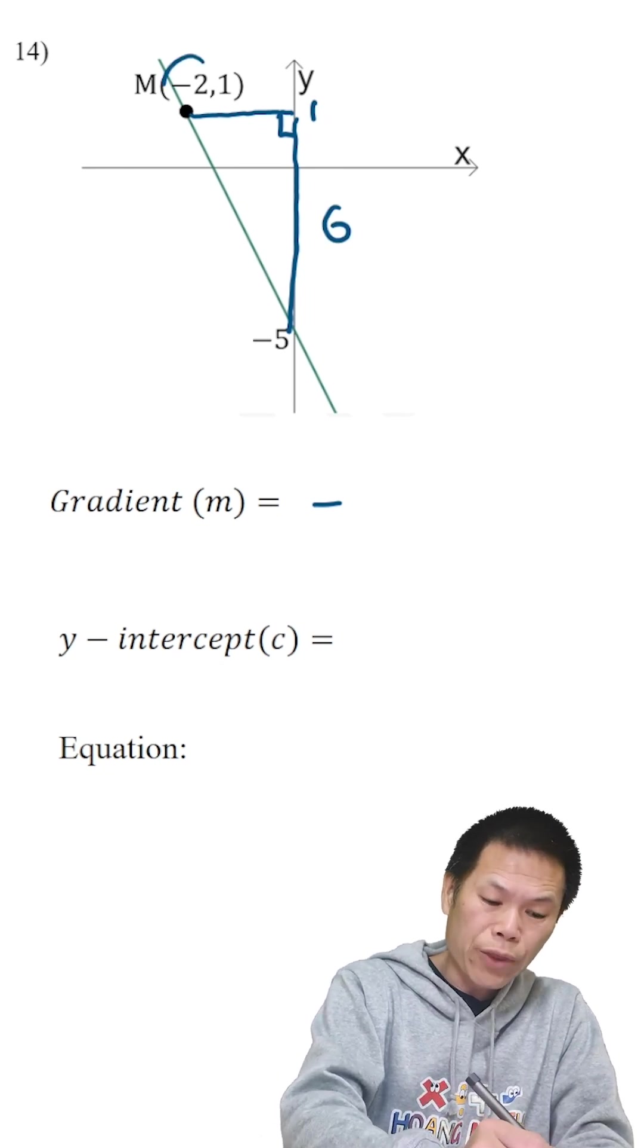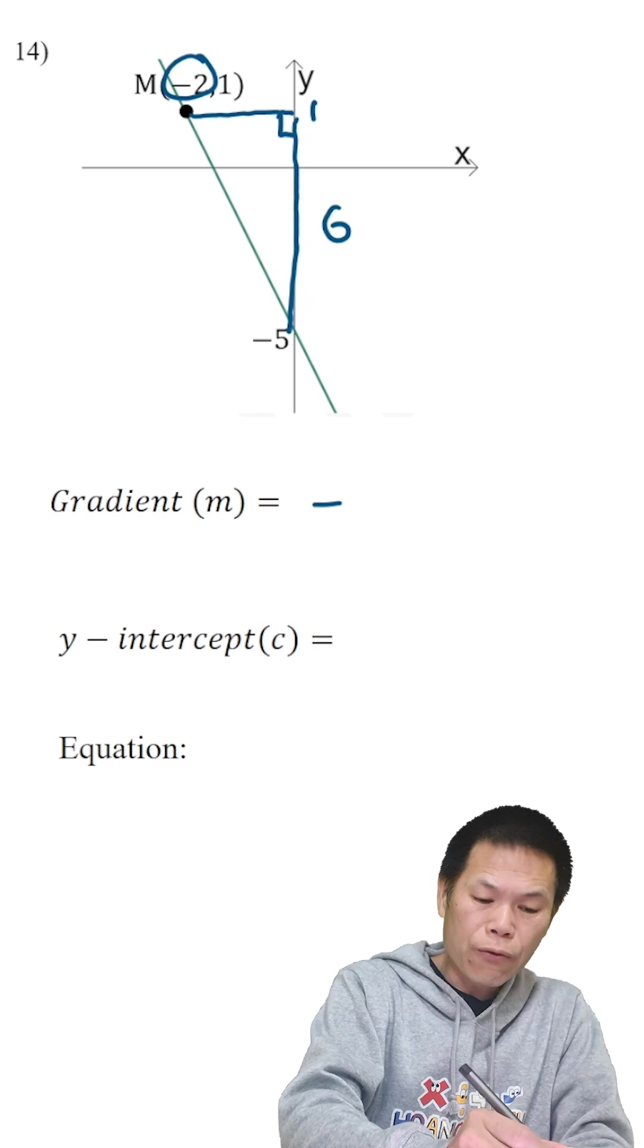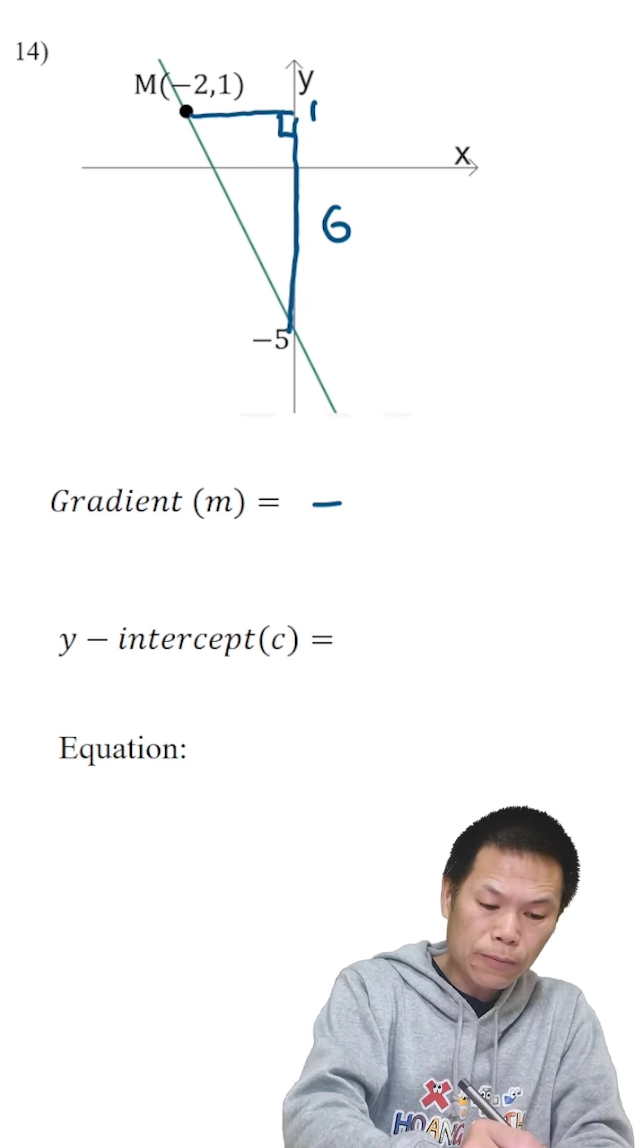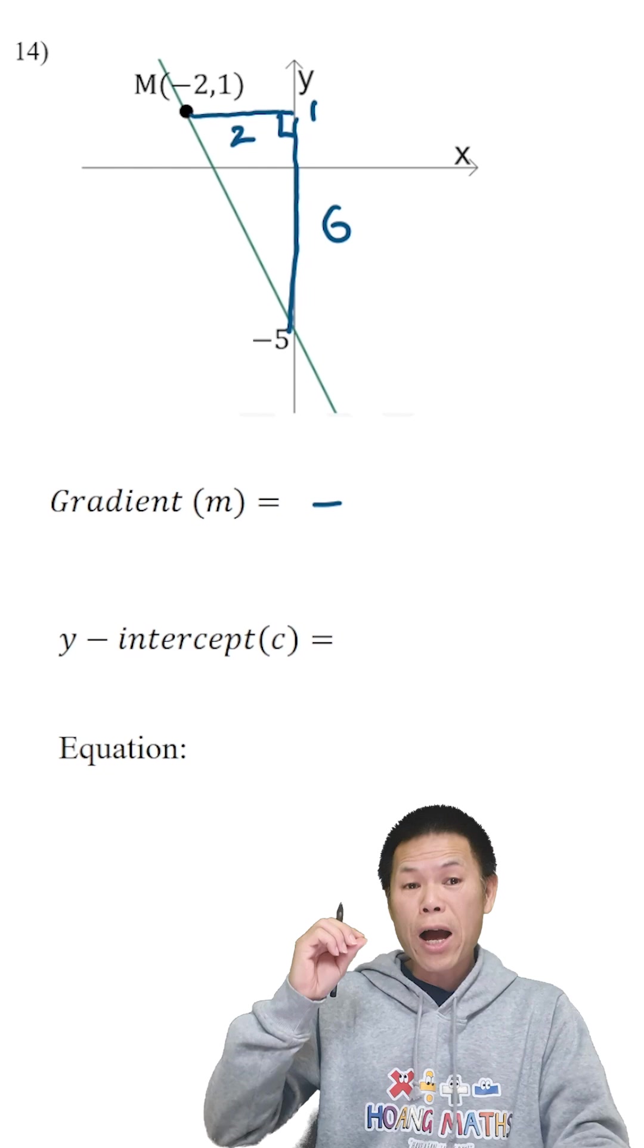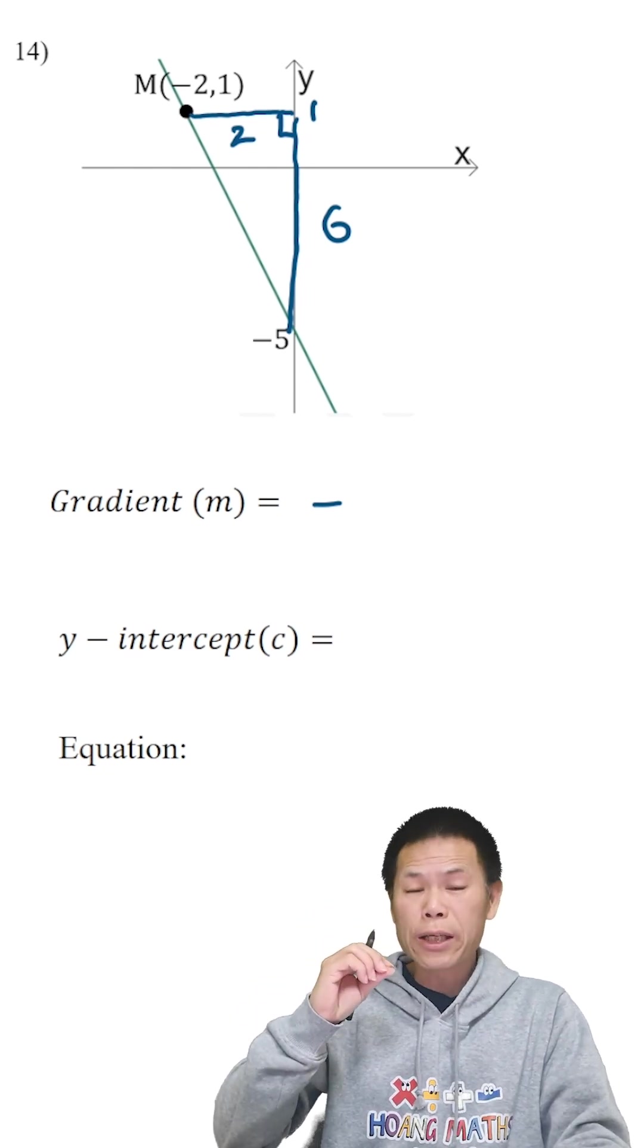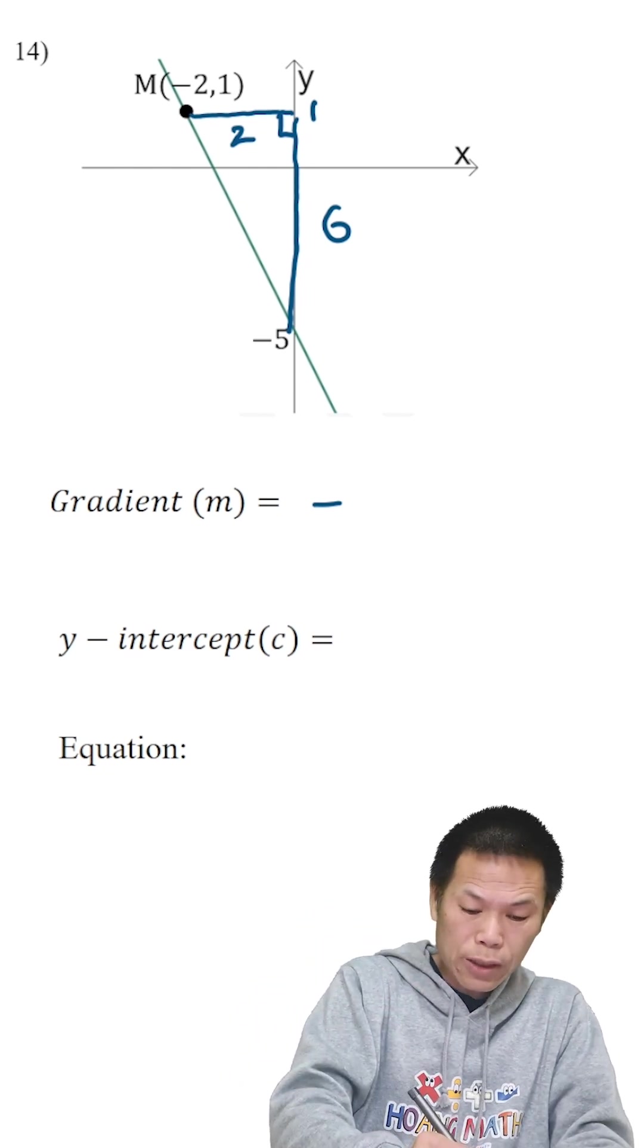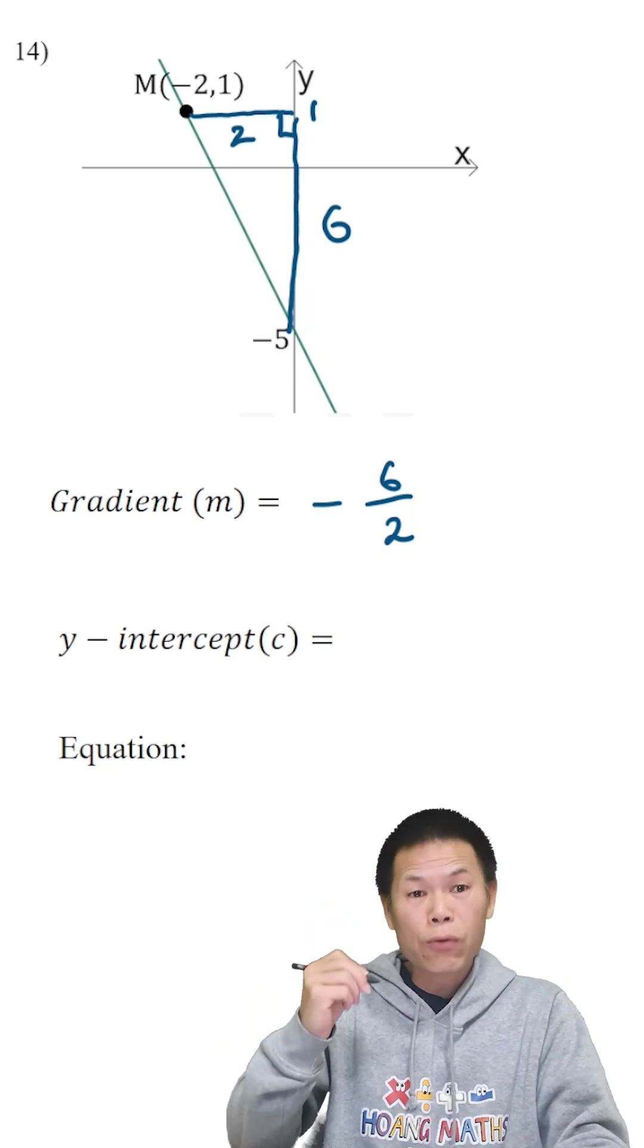And then we have negative two here. So therefore the run is two units. Let me just write underneath here. So there you go. So rise is six, run is two. So that is six over two, rise over run.